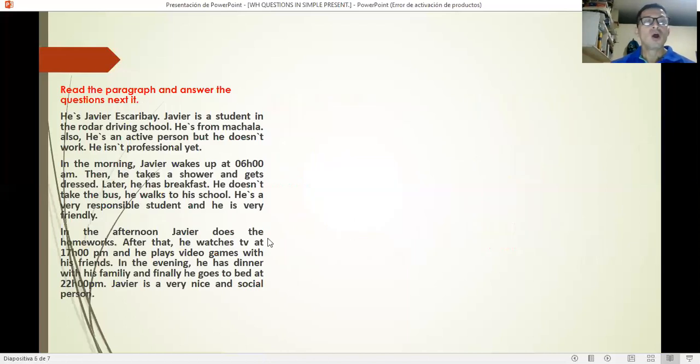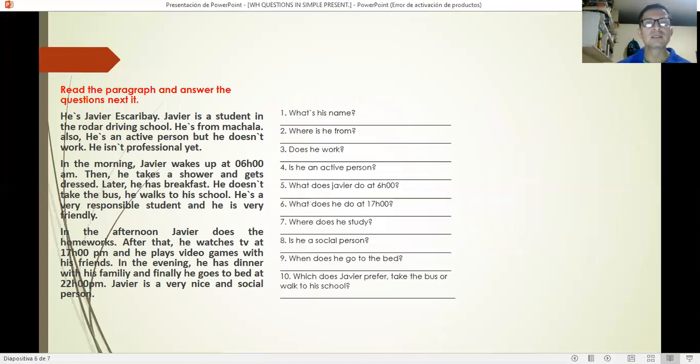Read the paragraph and answer the questions next to it. Here we have a paragraph about someone, Javier. I copied what we've seen previously and put it there so we have some relation. Read it and then answer the questions next to this text: What's his name? Where is he from? Does he work? Is he an active person? What does Javier do at six o'clock? What does he do at 17:00? Where does he study? Is he a social person? When does he go to bed? Which does Javier prefer, take the bus or walk to his school?